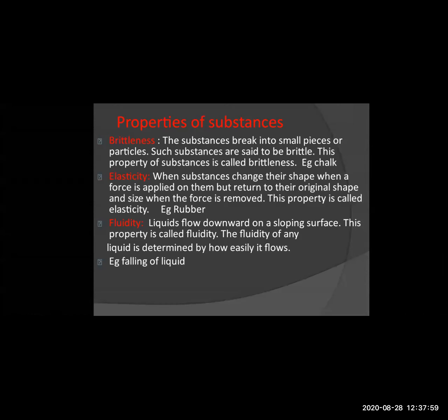The third property is fluidity. The liquid flows downward on a sloping surface — the liquid flows from one direction to another. This property is called fluidity. For example, water or oil fallen on the floor immediately moves from one place to another and flows in a downward or sloping direction. We cannot immediately collect liquid things.